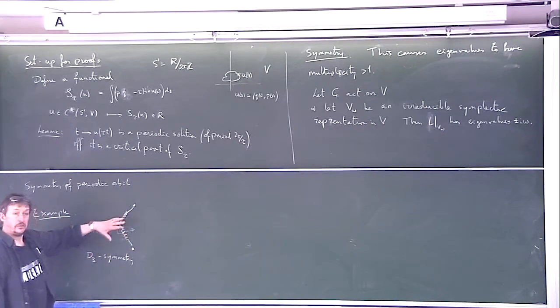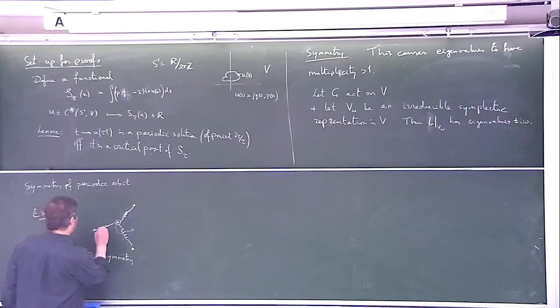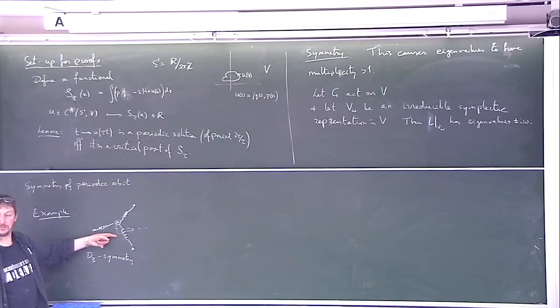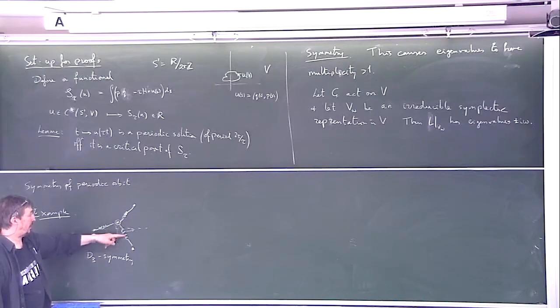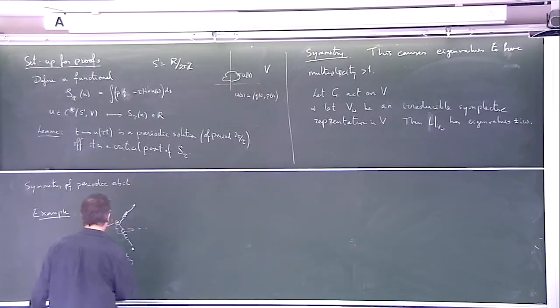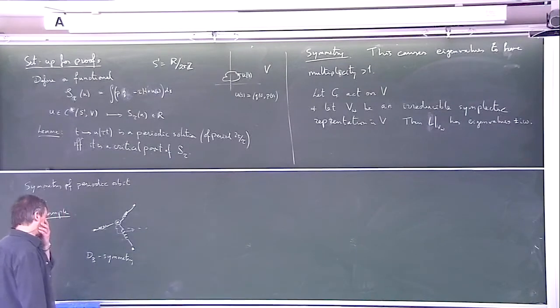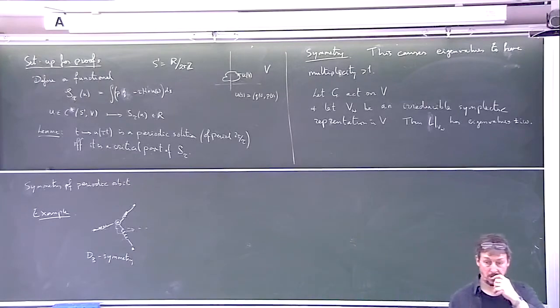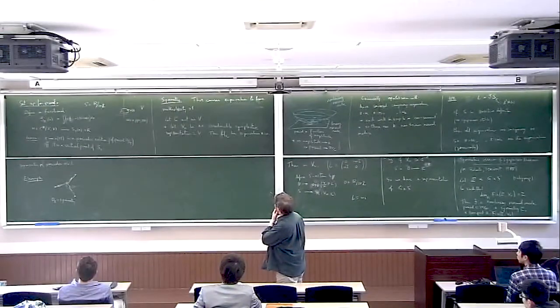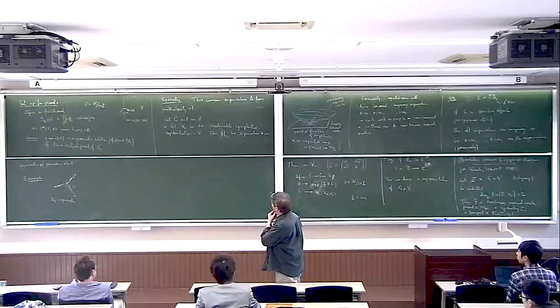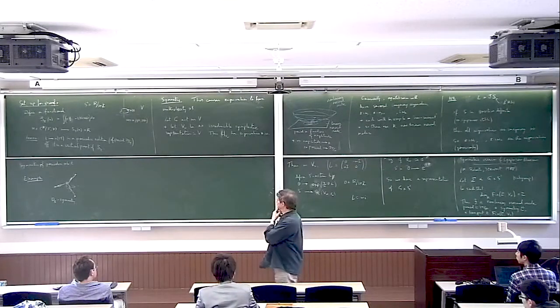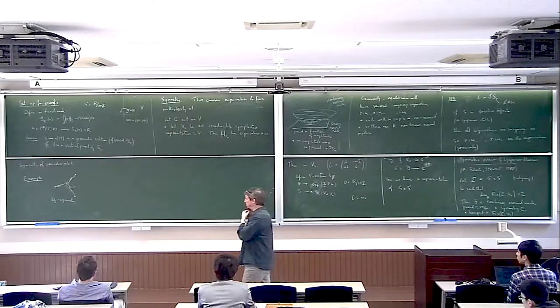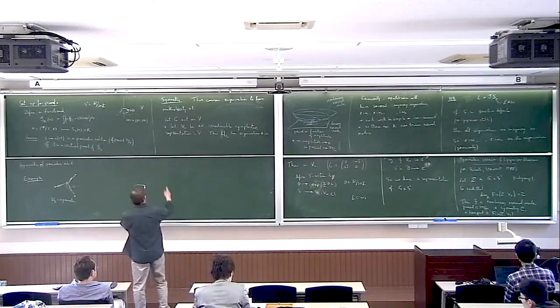One can write down long expressions for the potential energy, but I won't do that because we can apply the theorem without any knowledge of the explicit Hamiltonian, just a couple of assumptions. This has D3 symmetry, the symmetry of the equilateral triangle by construction. The springs are identical and they're at the vertices of an equilateral triangle. So if we swap the springs over, or if we move this point to the point below, the potential energy would be the same because you've just exchanged the lengths of these two springs.